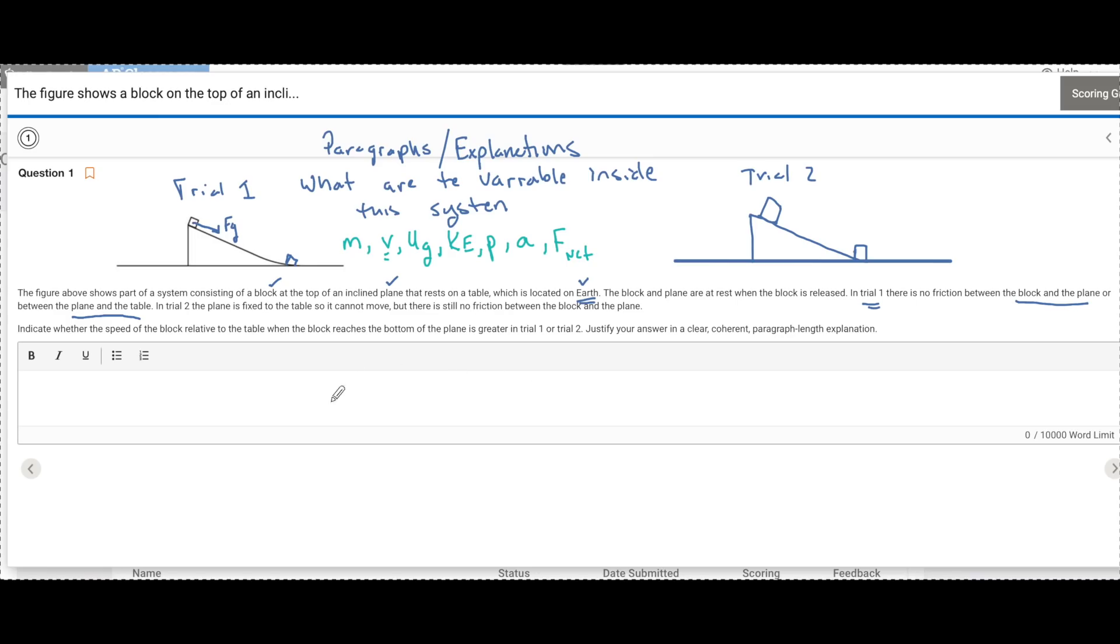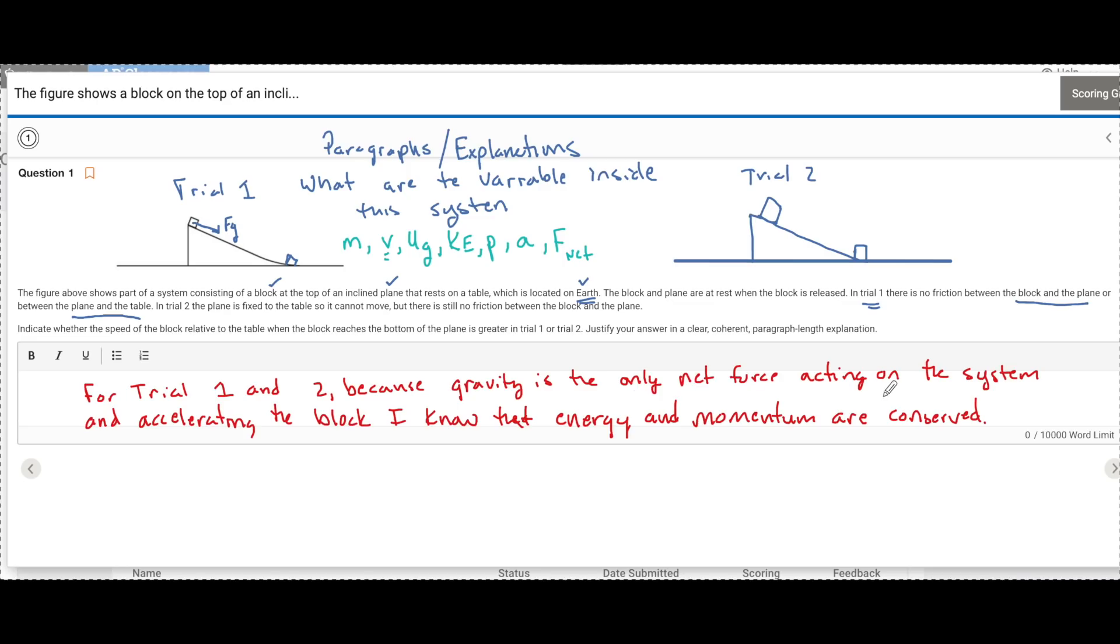So first, I'm going to make my first point. So the first point I'm going to make is for trial one and two, because gravity is the only net force acting on the system and accelerating the block, I know that energy and momentum are conserved. Now look what I just did here. I got rid of acceleration, F net, and momentum. And I even talked a little bit about energies.